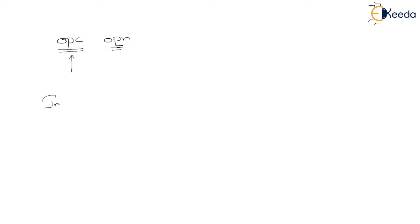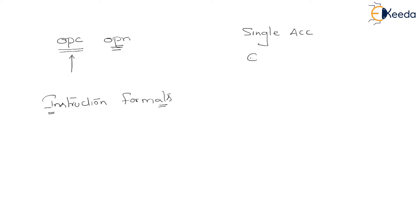Now we are talking about instruction formats. These instruction formats will talk about the number of operands that are going to be supported by an instruction in each of the CPUs. You know that there are three kinds of register organizations: one is single accumulator, the second one is general register, and the third one is stack organization. This instruction format talks about the number of operands that can be supported by a single instruction.